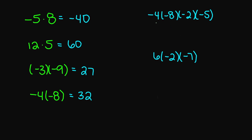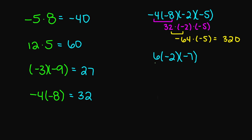Let's look at the examples on the right. We have negative 4 times negative 8 times negative 2 times negative 5. Negative 4 times negative 8 gives a positive 32. Then positive 32 times negative 2 gives negative 64. Negative 64 times negative 5 gives a positive 320. And looking at the example below: 6 times negative 2 gives negative 12. Then negative 12 times negative 7 gives a positive 84.